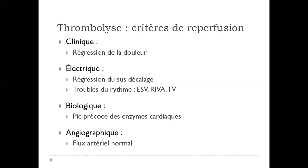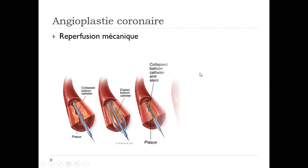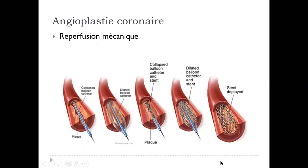Peut-on réaliser d'emblée l'angioplastie sans passer par la thrombolyse ? Bien sûr. Généralement, on fait l'angioplastie sans thrombolyse. Dès qu'on a une salle de cathétères disponible, on fait l'angioplastie d'emblée, pas de thrombolyse. L'angioplastie coronaire, c'est la reperfusion mécanique. On fait passer un guide. Je vais vous montrer les images tout à l'heure, comment ça se passe.